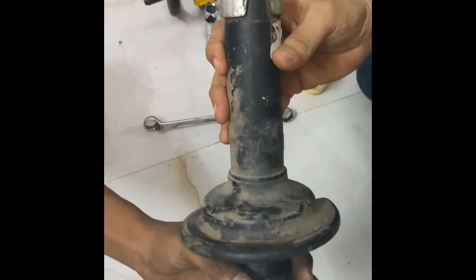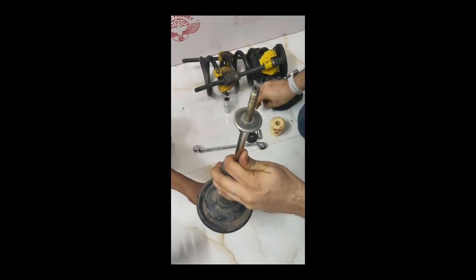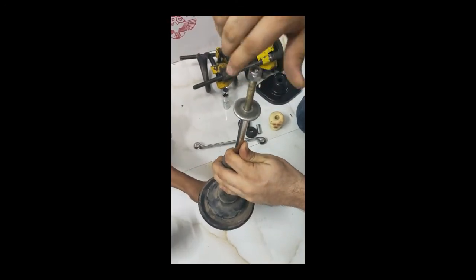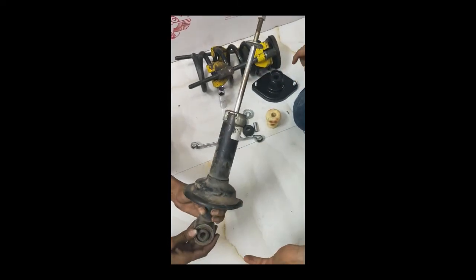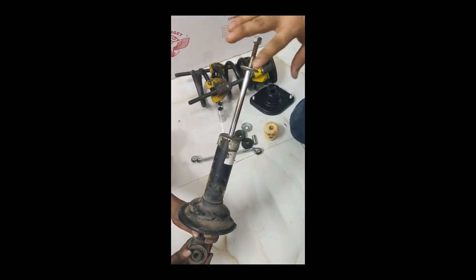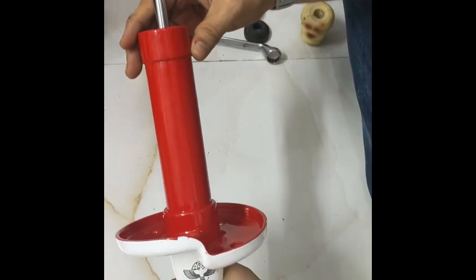This is the raw shock absorber. Now we are not going to use this original washer and its nut. These things have been provided by ARC with the new shock absorber, so you don't require this to be fit onto the vehicle.